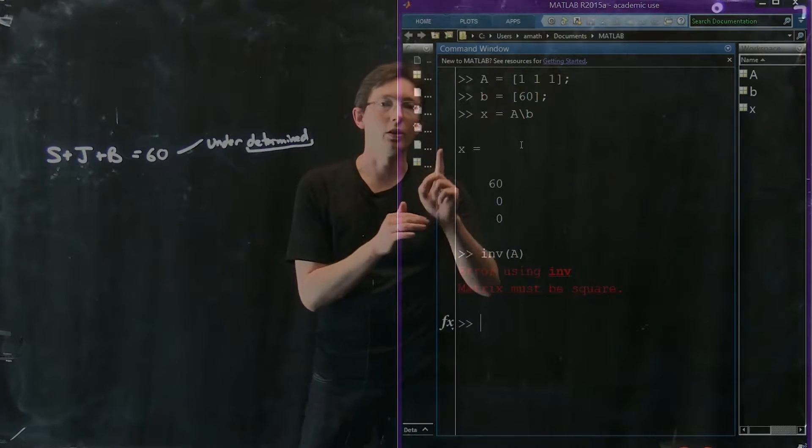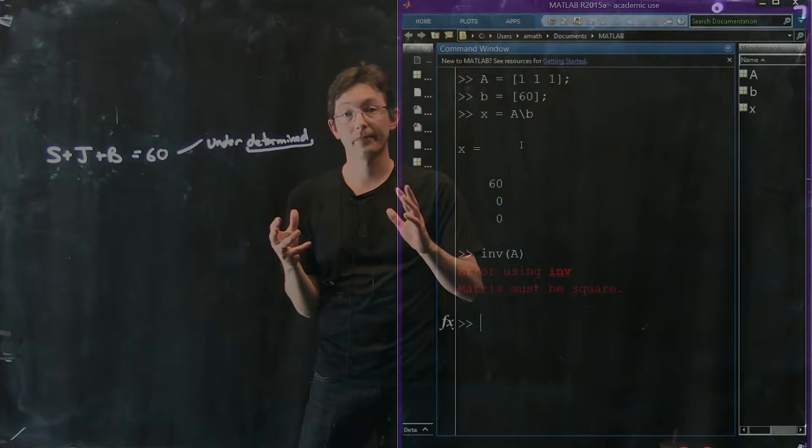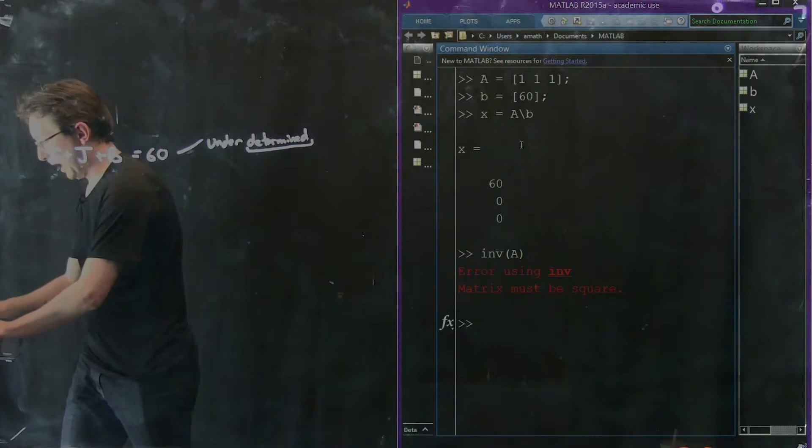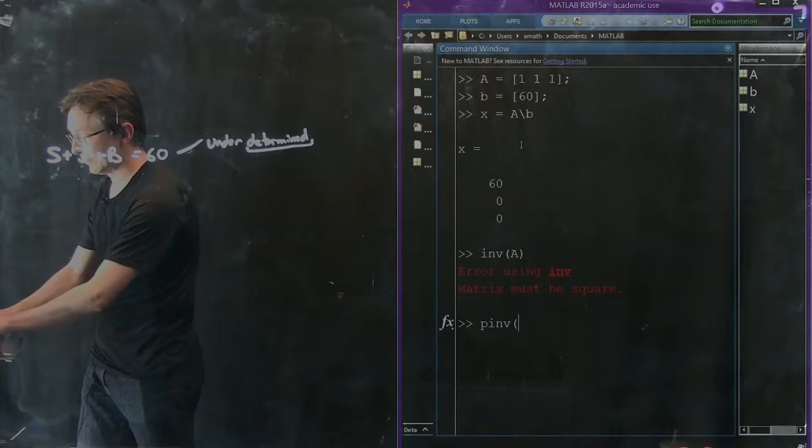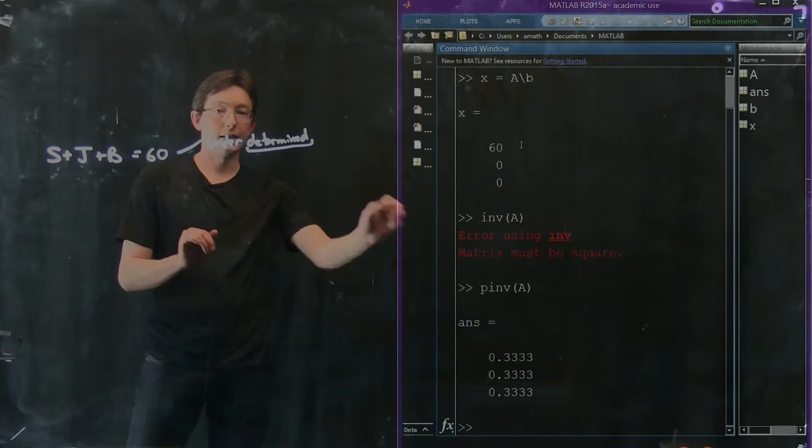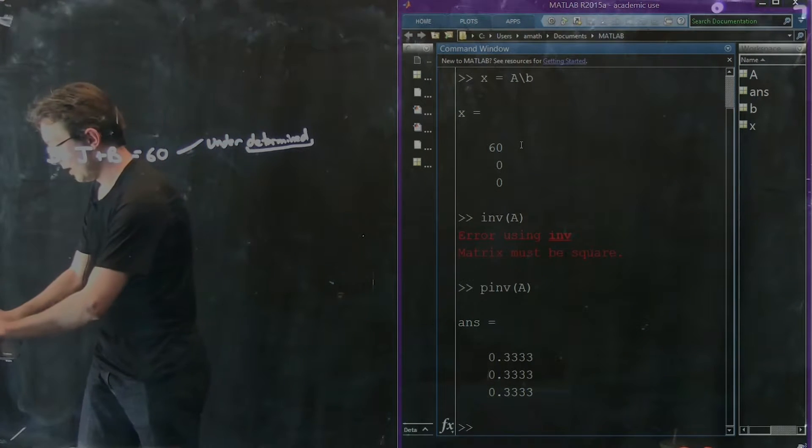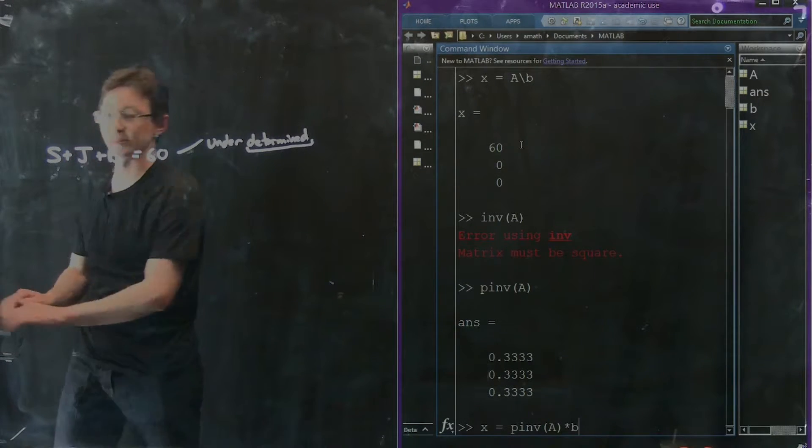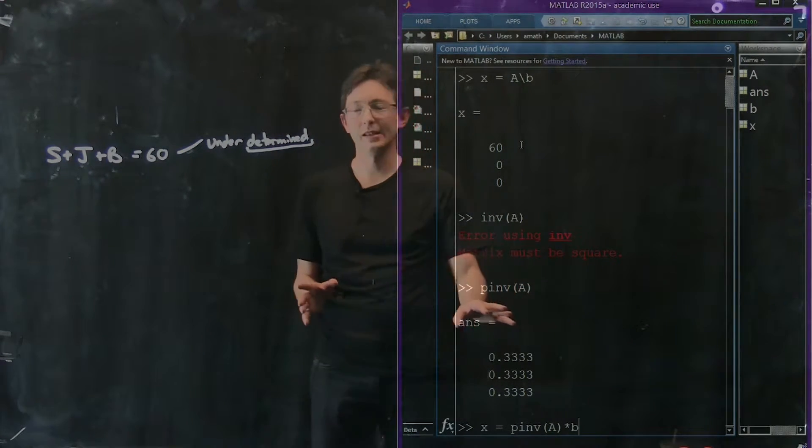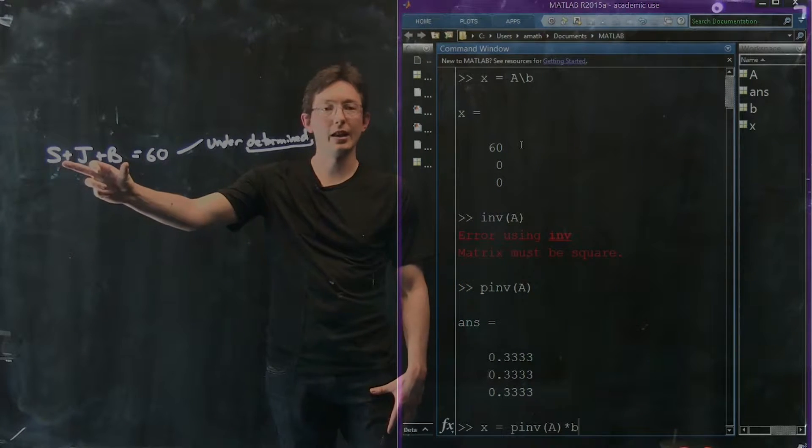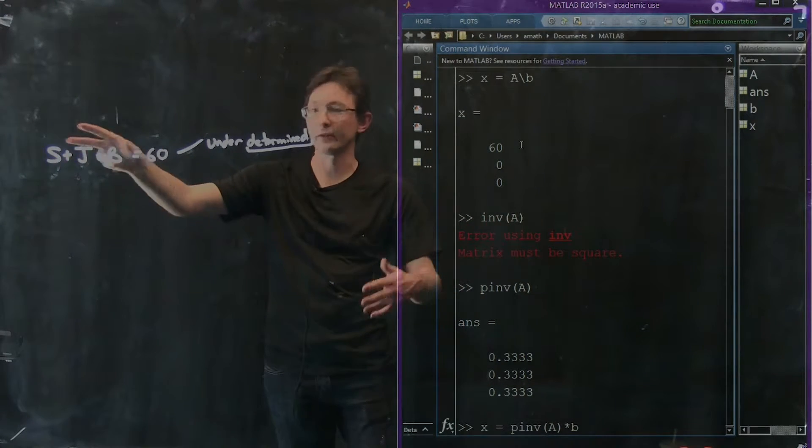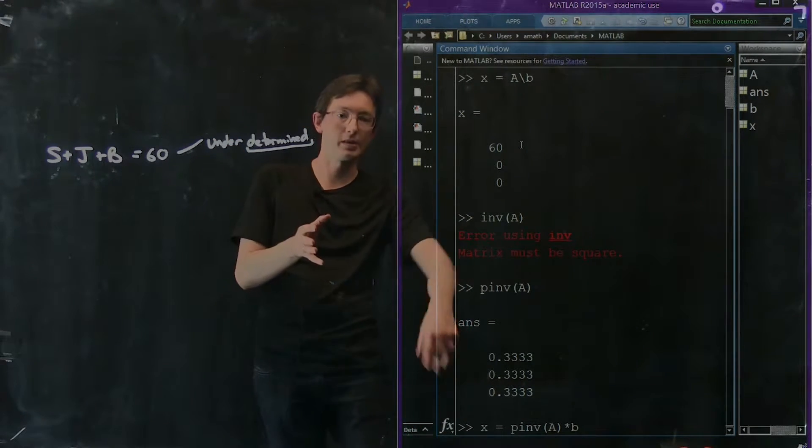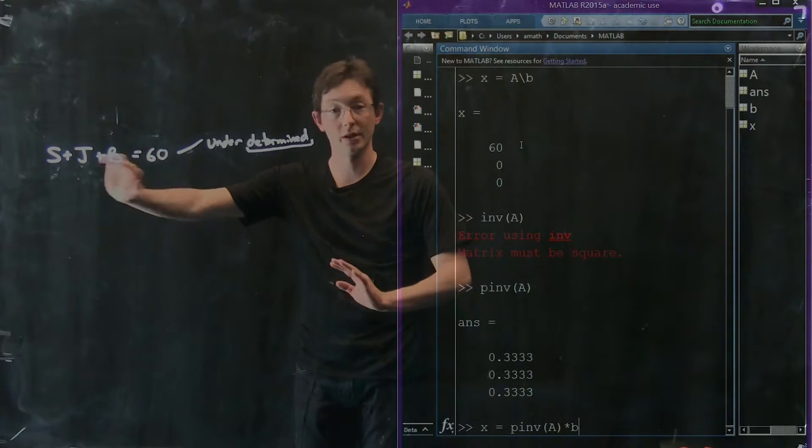But there is a technique called the pseudo-inverse. And we'll learn about the pseudo-inverse when we talk about singular value decomposition. But I could type pinv of A. I can take the p-inverse of A. And I could solve X equals my pseudo-inverse of A times B. So I'm not telling you what the pseudo-inverse is, but it's pseudo, it's a pseudo-inverse for non-square matrices. So I can kind of invert it, the pseudo-inverse, multiply that by B.